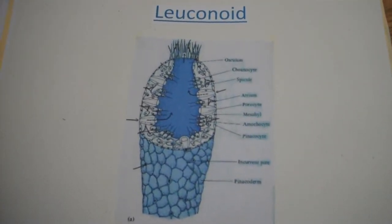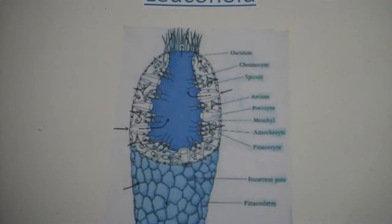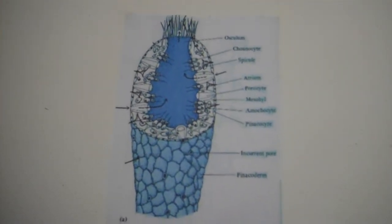This is a leuconoid sponge. As you can see, there are little hairs on the top of the sponge to help it eat. This is part of a sponge's digestive system.